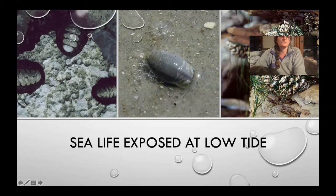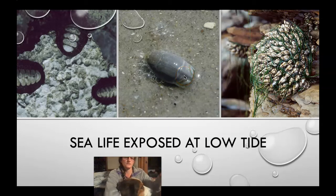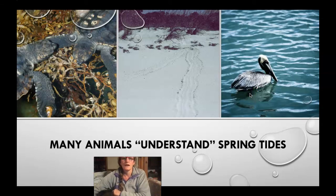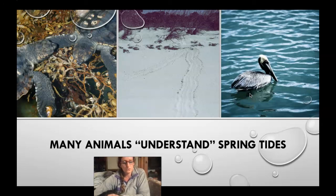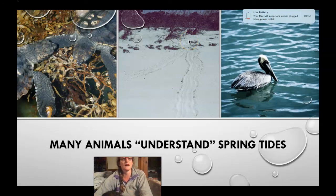Here's life that gets exposed at low tides. These little sand fleas are in the swash zone — when the waves come up you'll see them rolling around in the water. Then there are barnacle organisms that can be exposed. Many animals also understand the spring tides — for example, sea turtles will climb way up the beach to lay their eggs near the edge of the dunes, because they know the spring tides can be pretty high.